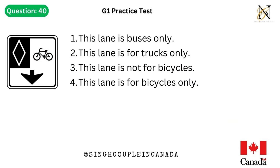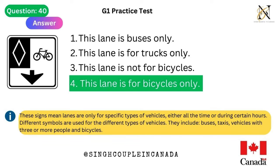Question 40. This traffic sign means: 1. This lane is buses only. 2. This lane is for trucks only. 3. This lane is not for bicycles. 4. This lane is for bicycles only. Answer is 4. This lane is for bicycles only. These signs mean lanes are only for specific types of vehicles, either all the time or during certain hours. Different symbols are used for different types of vehicles — they include buses, taxis, vehicles with 3 or more people, and bicycles.